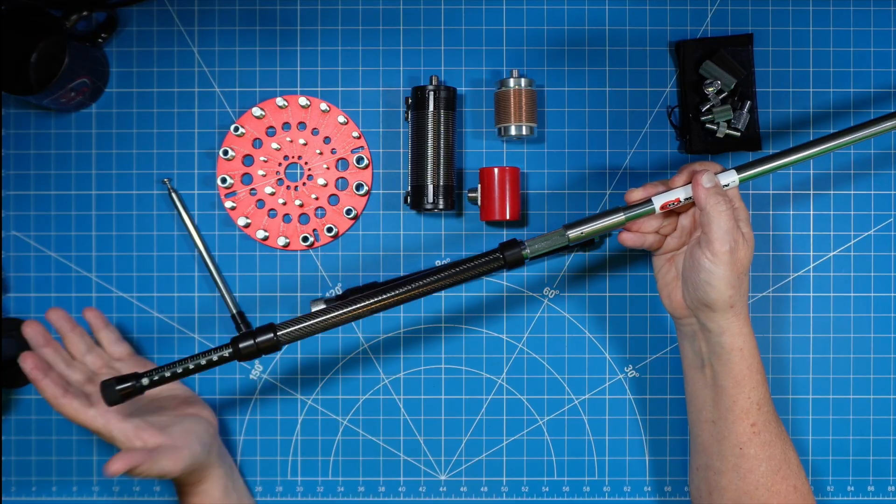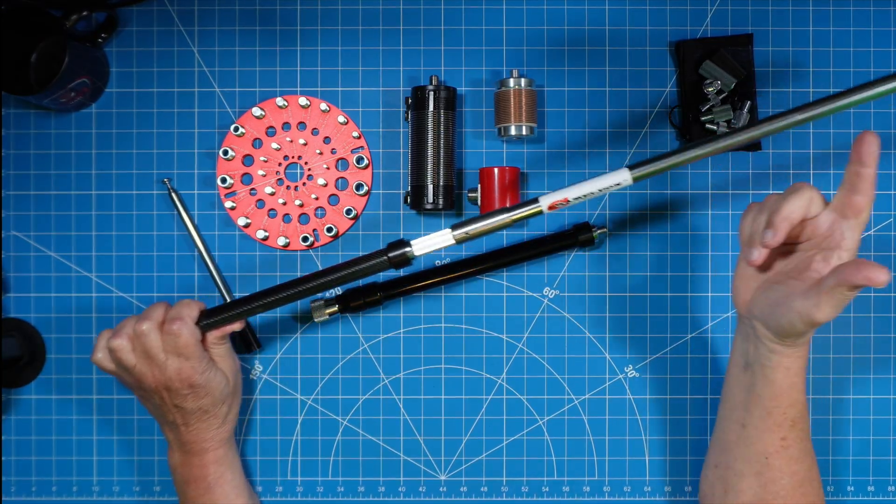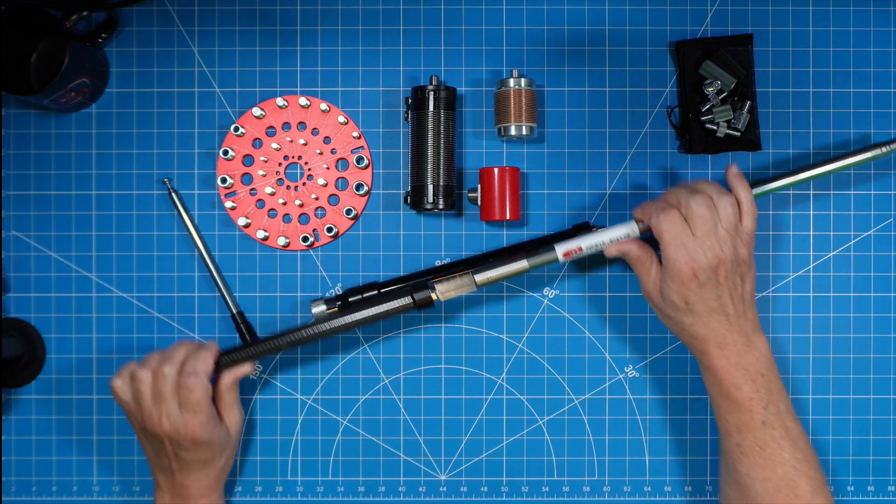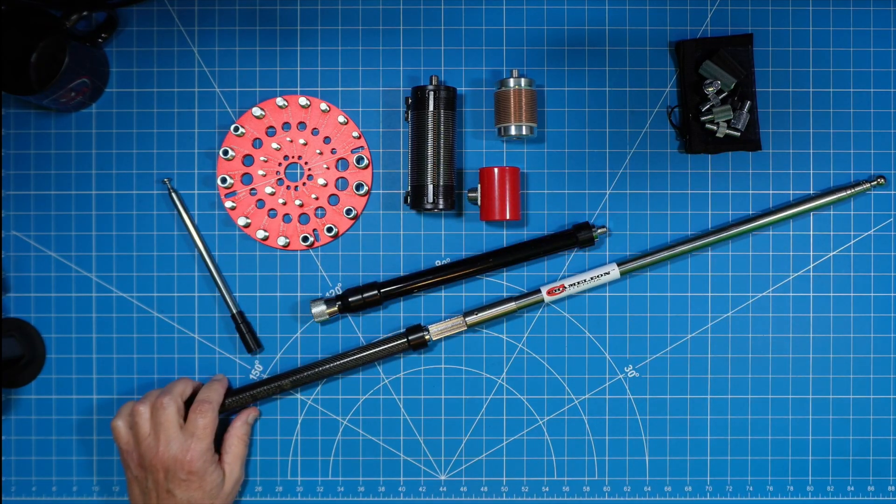And this is a good coil for 40 meters. I have used it many times. Collapse it, you've got 20. And then if you start collapsing sections of your SS-17, then of course you can get on all the higher bands as well.